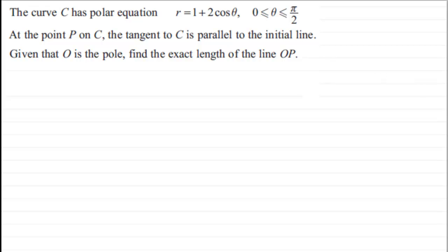So first of all, what I'd want to do here is to just do a sketch of what we've got. We've got our initial line, let's say we just put it down here. The initial line, remember, is where your angle theta equals 0, 0 radians. Then we've got a line through here, and we've got our pole which is O, given that O is the pole.